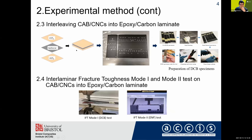We use the cellulose acetate butyrate and CNC nanofiber mat as an interleaf in the epoxy carbon laminate. We then test the interlaminar fracture toughness Mode 1 and Mode 2 for the CAB and CNC interleaf in the epoxy carbon laminate.